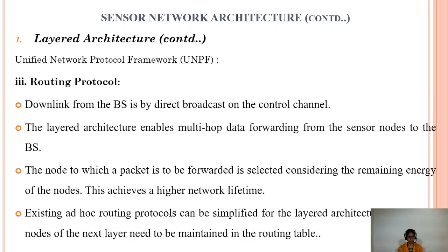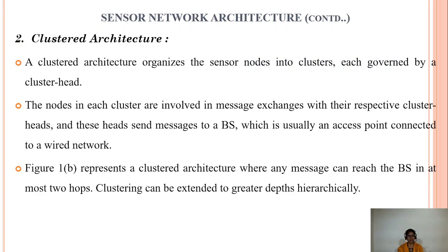The routing protocol works as follows: downlink from the base station is by direct broadcast on the control channel. The layered architecture enables multi-hop data forwarding from sensor nodes to the base station. The node to which a packet is to be forwarded is selected to achieve high network lifetime. Existing ad hoc routing protocols can be simplified for layered architecture since only nodes of the next layer need to be maintained in the routing table.